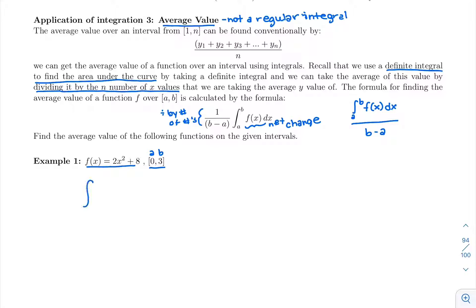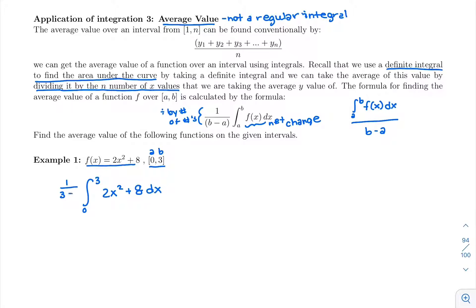We're going to find the total from 0 to 3, total change of 2x² + 8 dx, means we're going to take an integral. And then we're going to remember to divide by the number of numbers. So we're going to have 1 over b minus a out front, 1 over 3 minus 0.